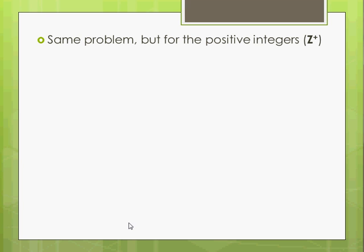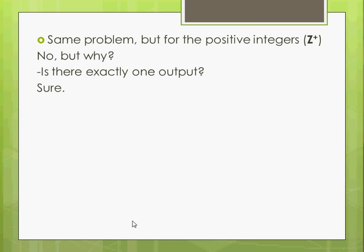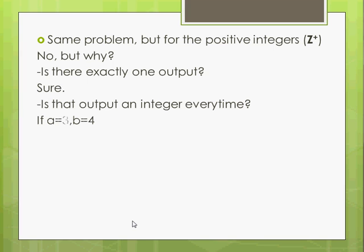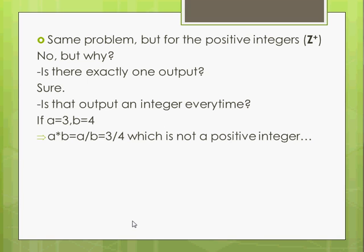This is the basics. Let's get some more examples. So this time we're talking about the positive integers. You might think, well of course, if it works for the positive rationals, it's got to work for the positive integers. But this time we're talking about the positive integers. Why doesn't it work? We're good on having exactly one output. But is that output an integer? So if a is 3 and b is 4, when we divide those two, we get 3 fourths. And that's not a positive integer. So in this case, our set would not be closed. So it's not a binary operation.